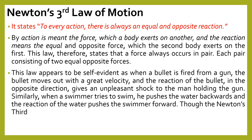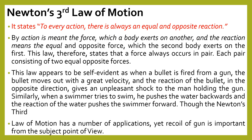This law appears to be self-evident. For example, when we fire a bullet from a gun, the bullet moves out with great velocity from the nozzle of the gun, and the reaction of the bullet is in the opposite direction, which gives an unpleasant shock to the man holding the gun. The bullet goes in the forward direction, and in the opposite direction there is a reactive force in the form of a shock to the person holding the gun — which is known as the recoiling of a gun.